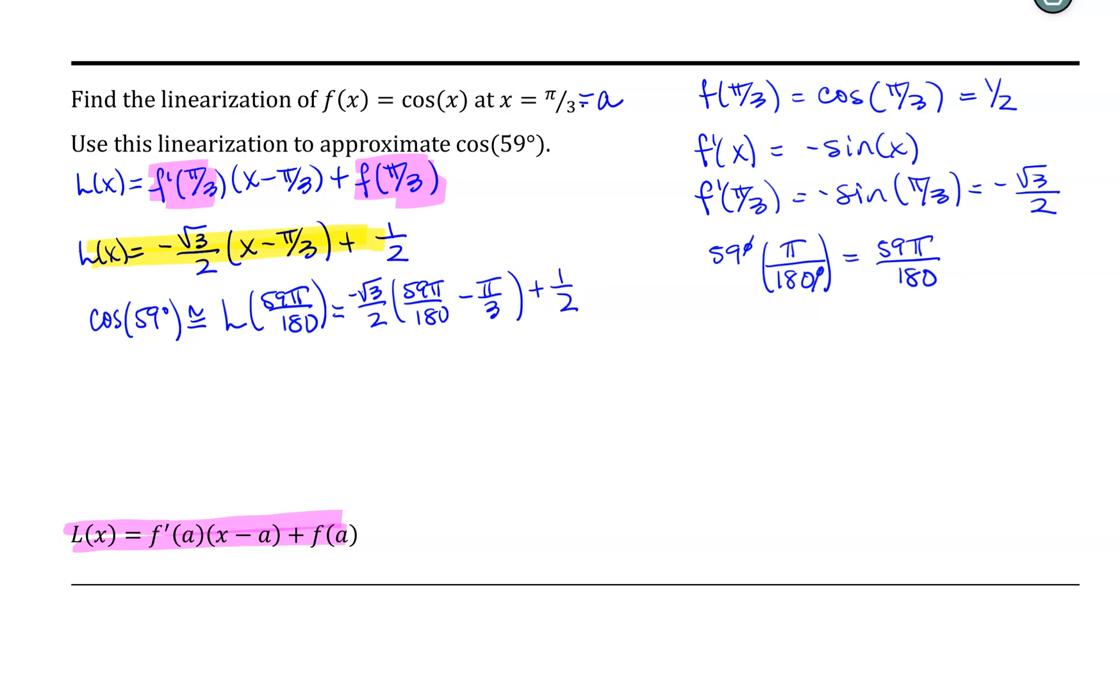We'll go ahead and simplify this a little bit. We can get a common denominator between the 180 denominator and the 3 by multiplying by 60/60. When that happens, notice that in my numerators, I will have 59π - 60π. So I will have -π in my numerator. So this is going to be equal to -√3/2 times -π/180 plus 1/2.